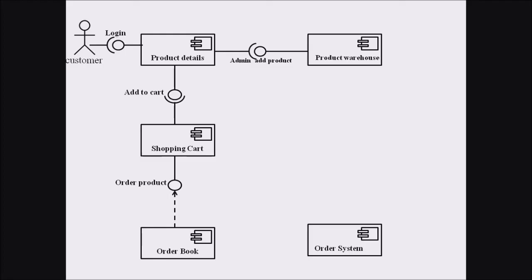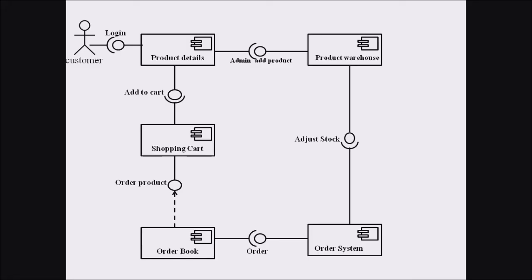Now we move to the next component termed order system. The order system is in interface with the order book — the interface relation is ordering. Once the building process is completed, the order book moves towards the order system. The order system is also dependent upon the product warehouse, as ordered products must be reflected and adjusted in the product warehouse database.